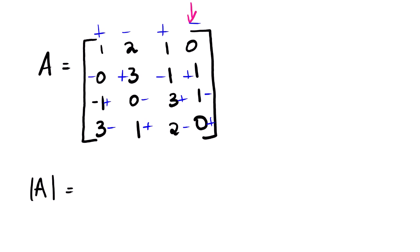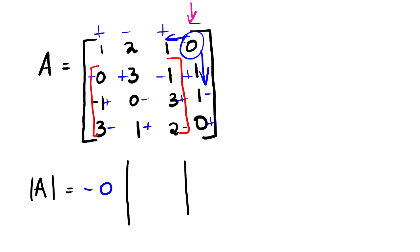Looking at the last column, we can see that we have negative zero as the first element — this affects its row and column — and then we have a 3x3 matrix with entries: 0, 3, 1, negative 1, 0, 3, 3, 1, 2.